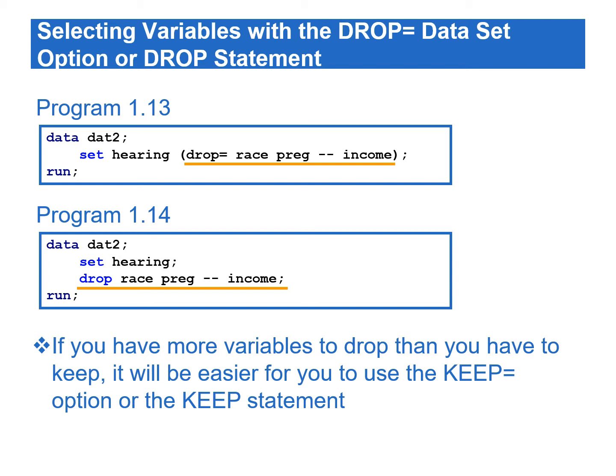In this program, writing preg double-dash income is equivalent to listing all the variables between preg and income. Program 1.14 achieves the same result by using the DROP statement. If you have more variables to drop than to keep, it will be easier to use the KEEP= option or KEEP statement to save typing. Conversely, if you have more variables to keep than to drop, you should use the DROP= option or DROP statement.